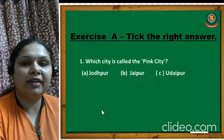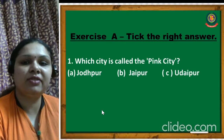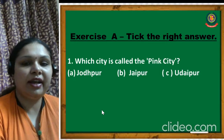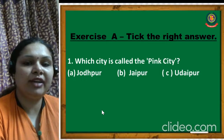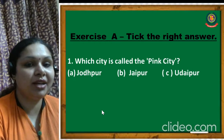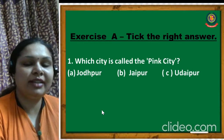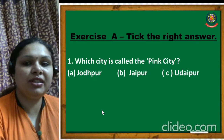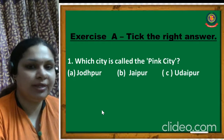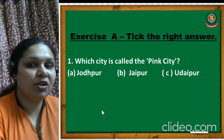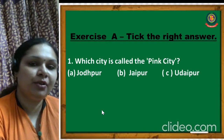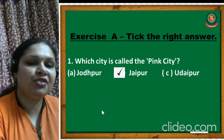Now we will do the exercises. Tick the correct answer. Which city is called the pink city - Jodhpur, Jaipur, or Udaipur? The correct answer is Jaipur - Jaipur is called the pink city.